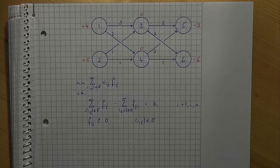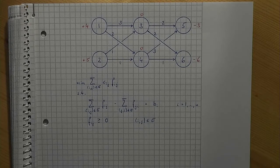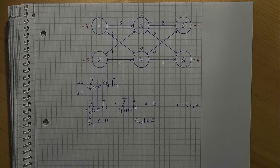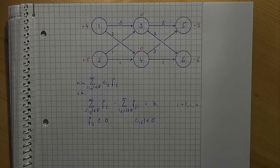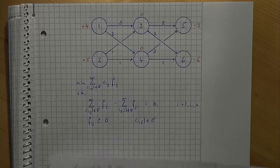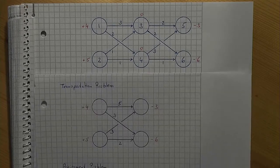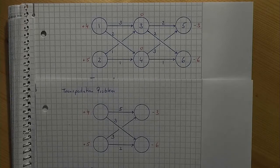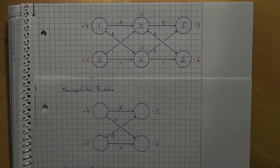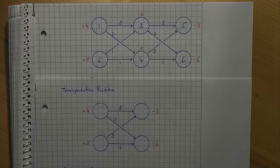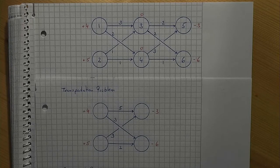A few special cases of the min-cost network flow problem should be mentioned. First, there is the transportation problem, which was already discussed in the previous video. The transportation problem has no intermediate nodes and arcs point from sources to sinks.